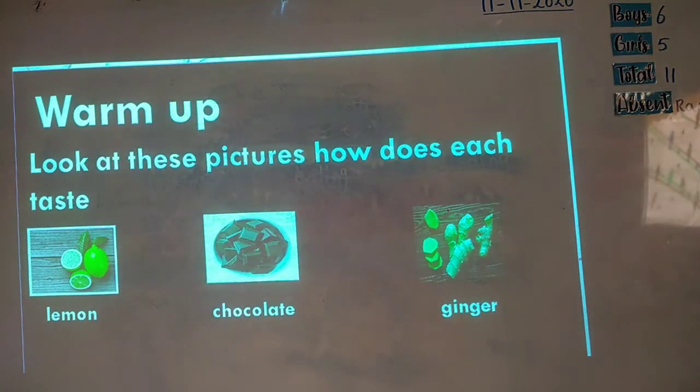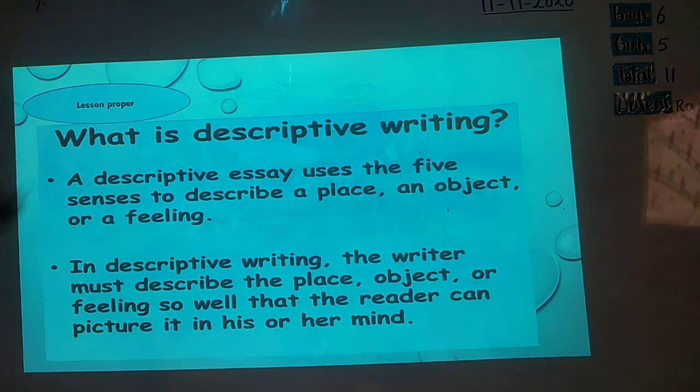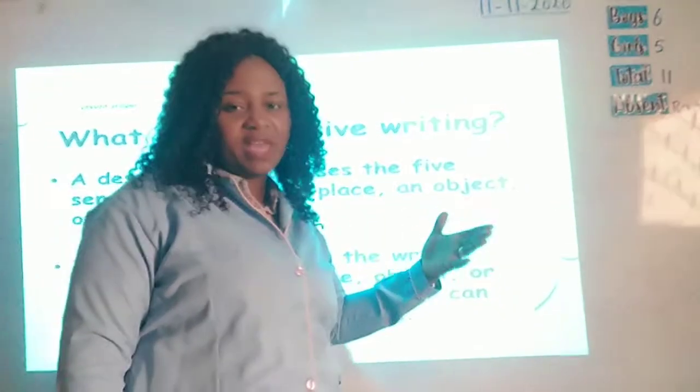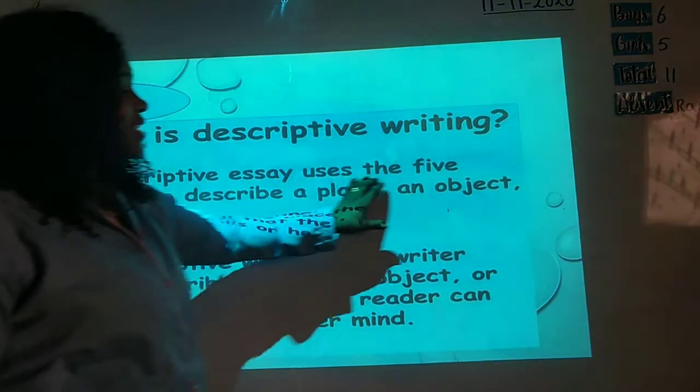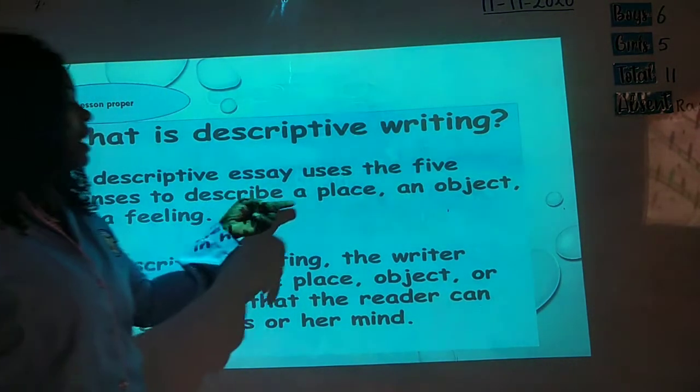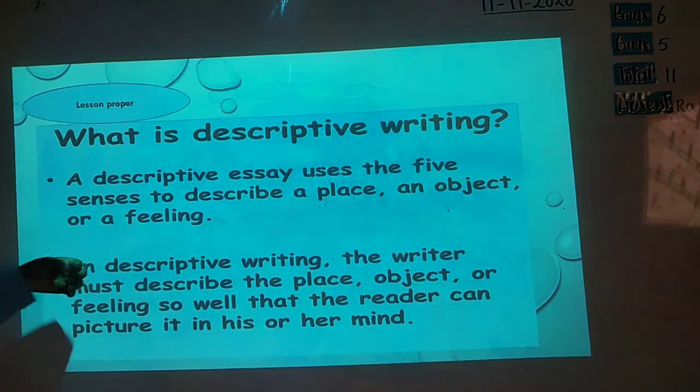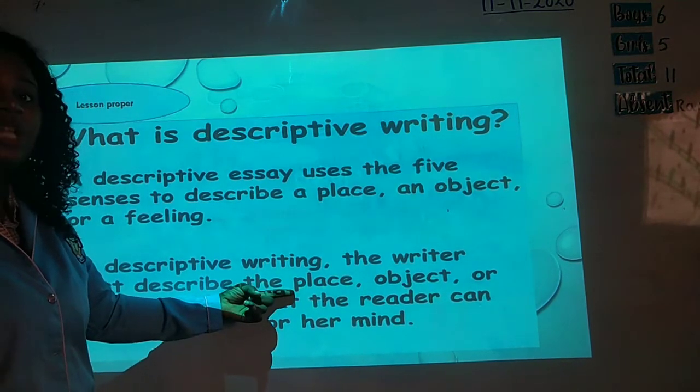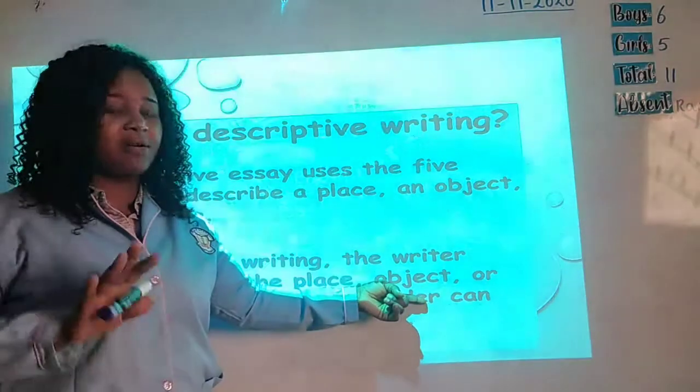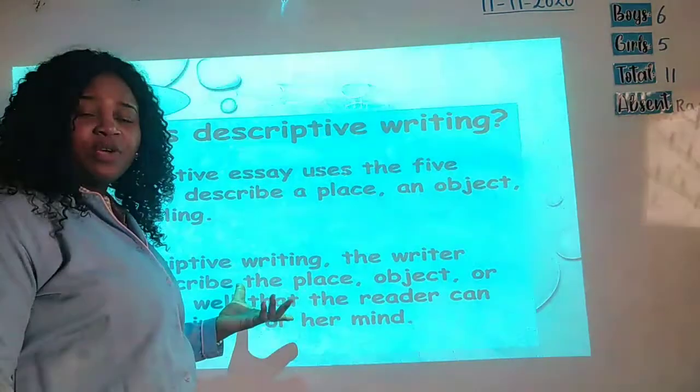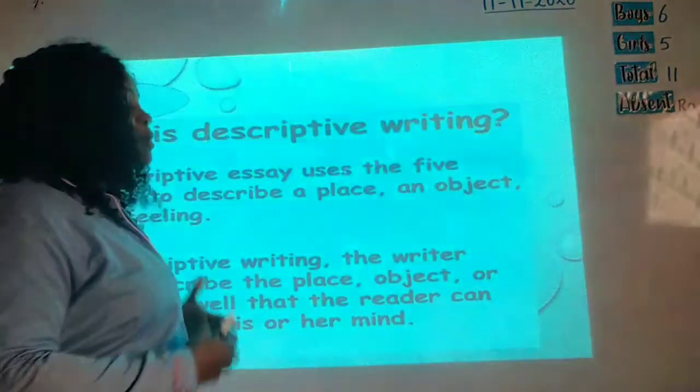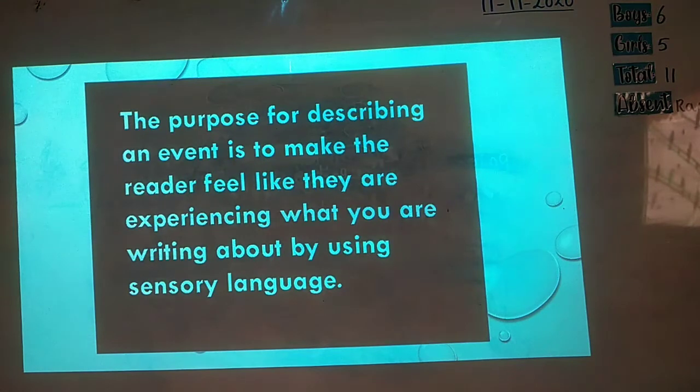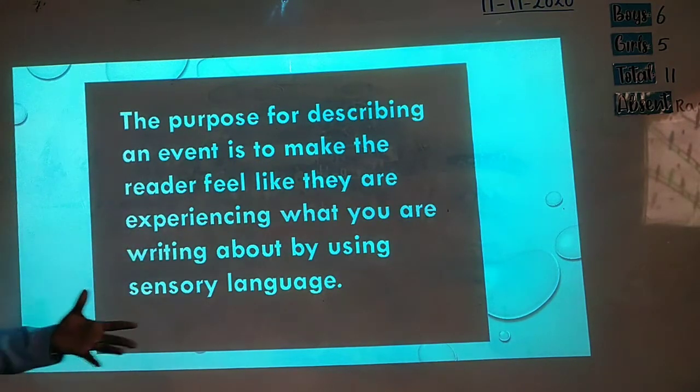Now this is all about our warm-up. We move into the lesson proper. Now we are going to start by explaining or defining what descriptive essay means. A descriptive essay uses the five senses to describe a place, an object, or a feeling. In descriptive writing, the writer must describe the place. What did you see there? Objects. All the things around you. All we are going to do in descriptive writing, you'll have your readers in mind because you want them to feel what you are writing.